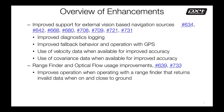Support for external vision-based navigation sources has been significantly improved, starting with better diagnostics logging. We're now able to individually inspect the innovations and innovation variances for individual components, distinguishing in a log the innovations from GPS versus those from the external vision system. There's also been addition of support for velocity data from an external vision system and use of the full covariance matrix that accompanies the vision-based state estimates.